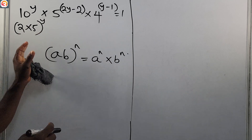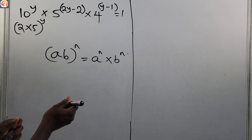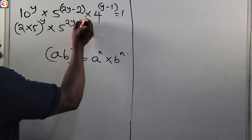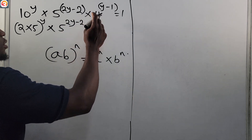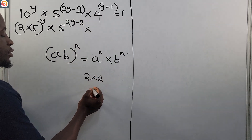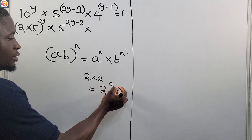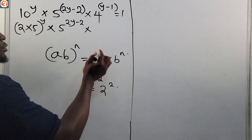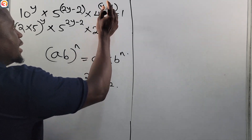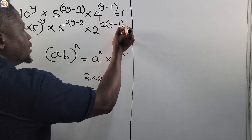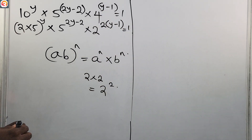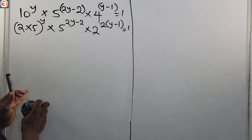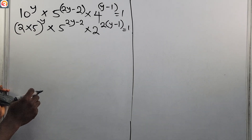So we reduce this, and we're going to have 5 raised to power 2y minus 2, times 4. And 4 is the same as 2 times 2, which is 2 raised to power 2. So we can break this 4 into 2 raised to power 2, giving us 2 raised to power 2 times (y minus 1), equals 1. That's the first step.